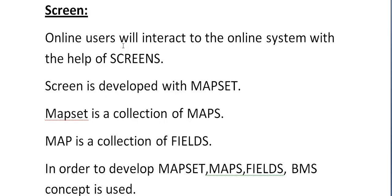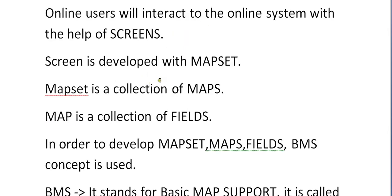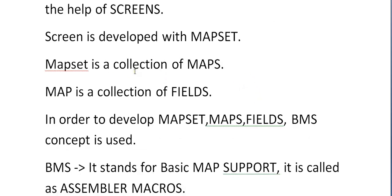For a railway reservation system, agents are provided with a transaction ID. Once they enter the transaction ID, their system screen is provided where they can enter customer information, submit a ticket, and give it to the customer. To develop that screen, a screen is developed using a map set. A map set is a collection of maps, and individual blocks in a screen are called maps. A map is a collection of fields.